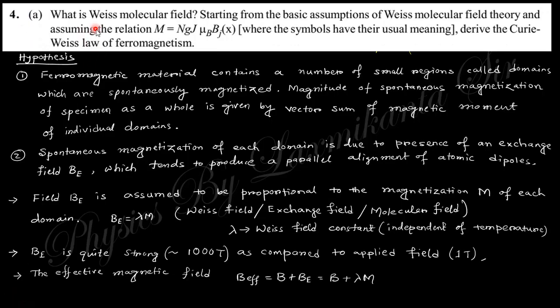The next question is: what is the Weiss molecular field? Starting from the basic assumption of molecular field theory and the relation, derive the Curie-Weiss law of ferromagnetism. The Weiss molecular field is when an external magnetic field is present, the dipoles within the domain align along the external magnetic field and produce a field which is known as the Weiss molecular field or exchange field.